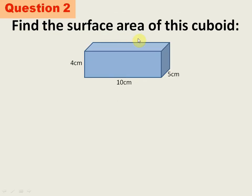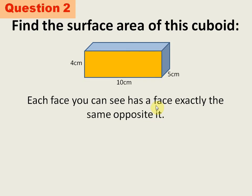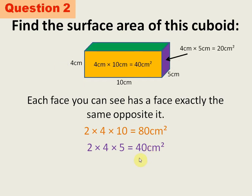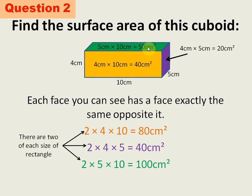Next question: find the surface area of a cuboid with dimensions 10, 5, and 4 cm. Front and back faces: 10 × 4 = 40 cm², two faces = 80 cm². Right and left faces: 5 × 4 = 20 cm², two faces = 40 cm². Top and bottom faces: 5 × 10 = 50 cm², two faces = 100 cm². Adding all: 80 + 40 + 100 = 220 cm².